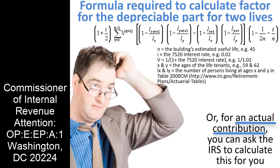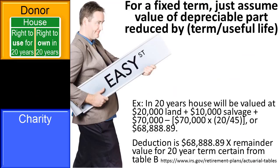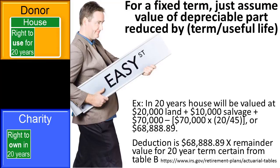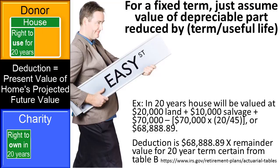The address is: Attention, OP:E:EP:A:1, Washington, D.C. 20224. A donor may also choose to give a remainder interest in a personal residence where the donor retains the right to use the property — or give that right to someone else — for a fixed number of years. For example, the donor could deed a personal residence to a charity with the provision that the donor retains the right to use the property for 20 years. In this case, the deduction is based upon the projected value of the personal residence in 20 years.